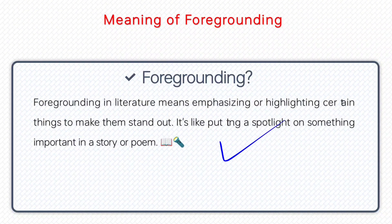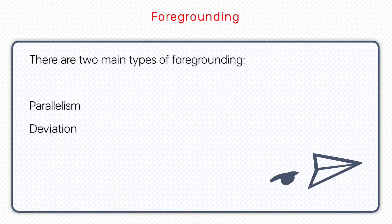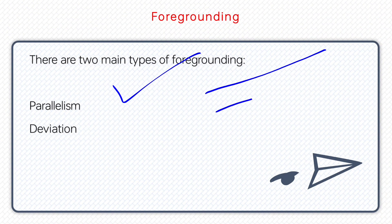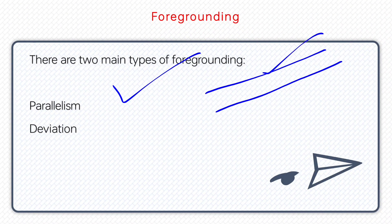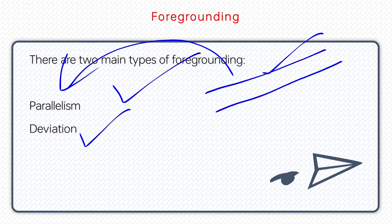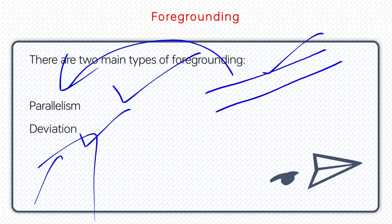There are two main types of foregrounding. The first one is parallelism, and the second is deviation. Deviation means to deviate from something — it means that the pattern and trends of the norm are broken.